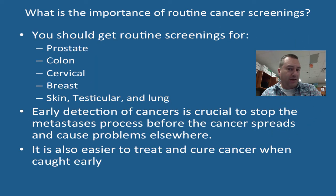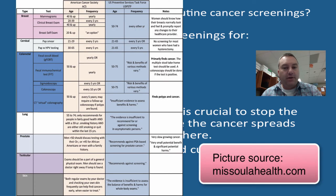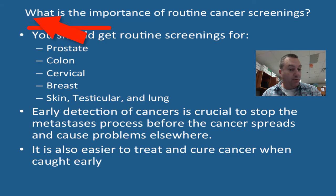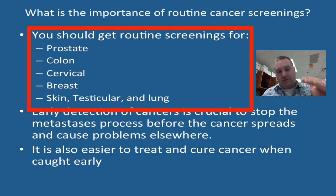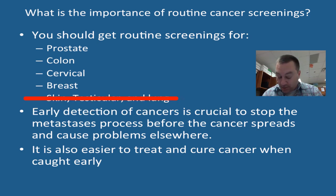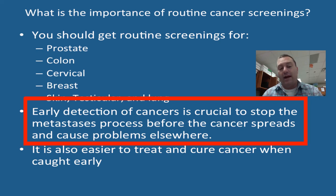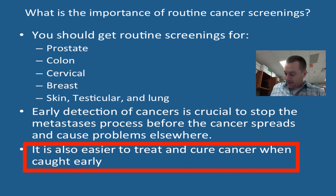What is the importance of routine cancer screenings? From Activity 3.2.5: you should get routine screenings at certain age groups for prostate, colon, cervical, breast, skin, testicular, and lung cancer if you have certain risk factors or are at a certain age. As you were going through the routine screenings, you made a note in your lab journal of when all of these should occur. With all cancers, early detection is key — earlier detection leads to faster treatment, and hopefully you've caught the cancer before it has metastasized. It is always easier to treat cancer earlier than later.